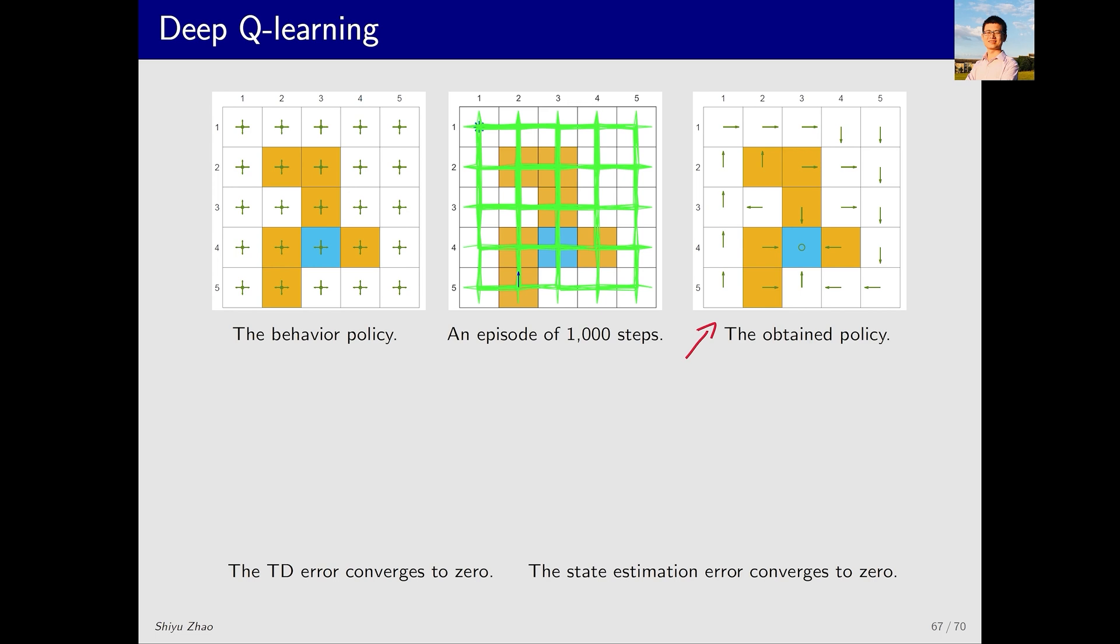We fed the 1,000 samples into the deep Q-learning algorithm, and the final output is the optimal policy. Let's examine the convergence process. The x-axis represents the iteration number, and the y-axis represents the TD error or loss function. You can see that the loss function eventually converges to zero. In the second graph, the x-axis still represents the iteration number, but the y-axis shows the state value error. We can use other methods to determine the optimal action value or state value and then compare them with the values generated by deep Q-learning at each step. As you can see, the error gradually converges to zero.